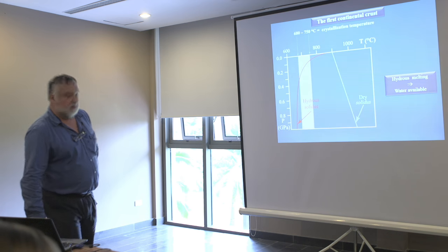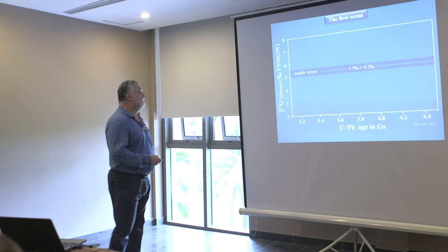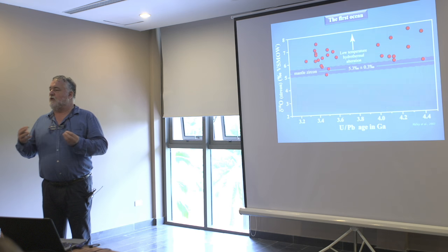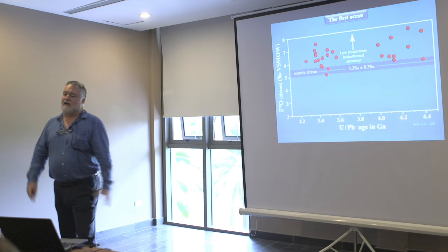Another point: some people, a group from Vallée, worked on oxygen isotopes. The values stable in equilibrium with the mantle composition are known. The values measured in the zircons from Jack Hills are significantly higher than the mantle values. The only possibility to obtain this high isotopic value is to have low-temperature hydrothermal alteration — meaning that the source of this granite interacted with low-temperature liquid water. So, once again, water was available at the surface of the Earth.